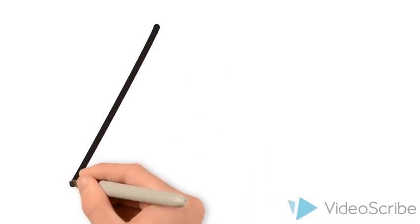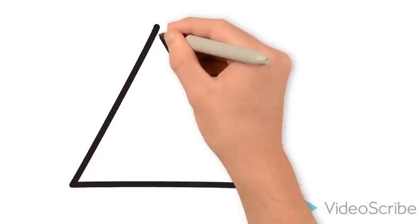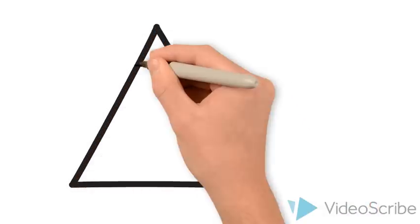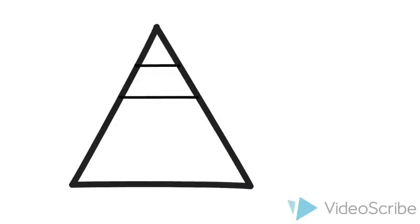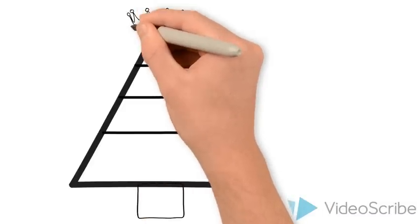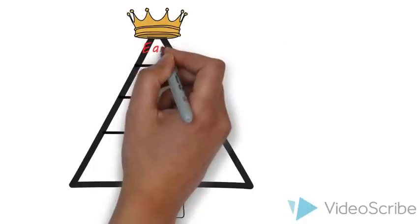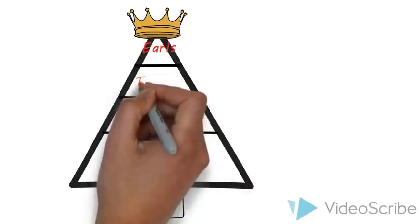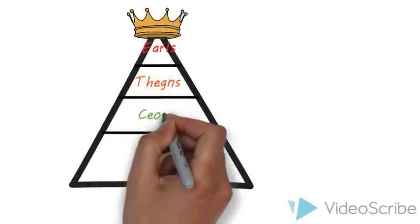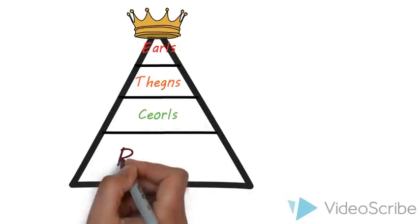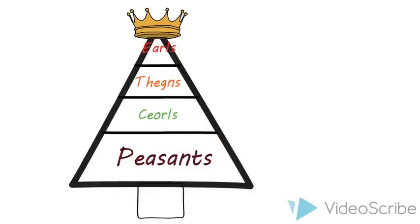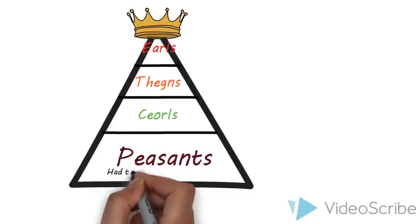Anglo-Saxon society effectively existed in a hierarchy, with a few individuals at the top and then going down in layers till most people at the bottom. At the very bottom there was a small underclass of slaves. At the top of the hierarchy was the king, who owned the whole of England. He gave out large bits of land to the earls, who then gave some of those bits of land to the thanes. Two types of peasants, the churls and normal peasants, worked the land with slaves, helping all other levels of society.